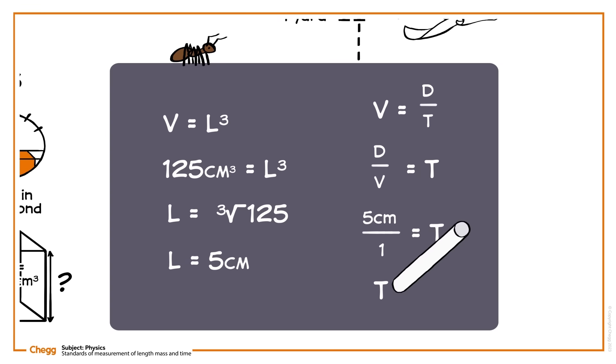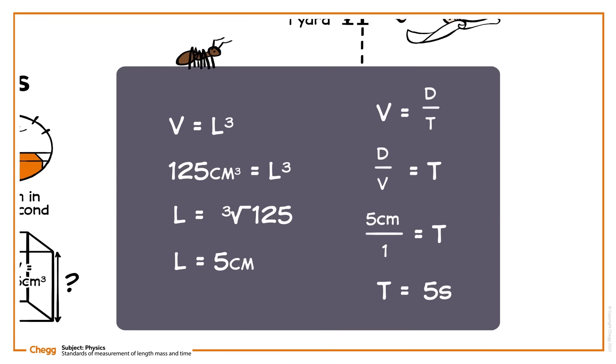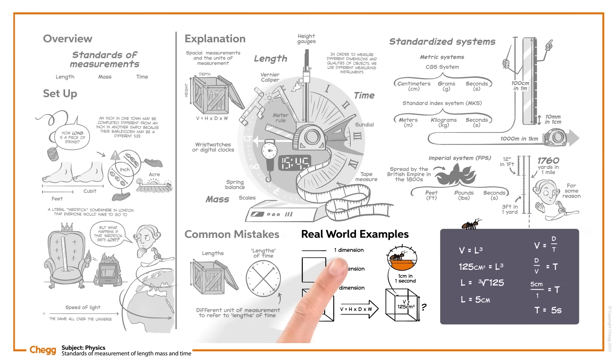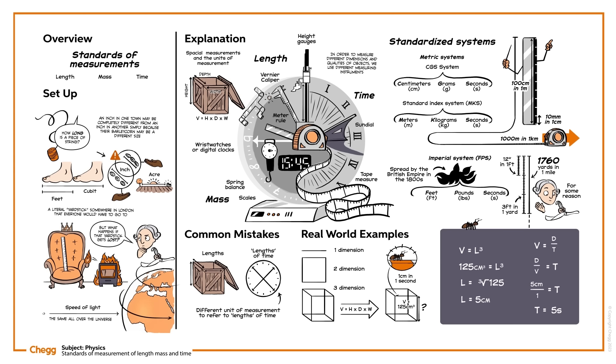We see, then, that the ant takes 5 seconds to travel along a single side. So now you're an expert on lengths, measurements, and ants. Oh wait, you need biology class for the ants. For extra practice problems on the physics of length, mass, and time, see our other online resources. See you next time!